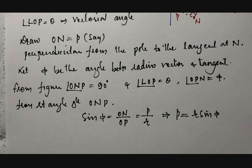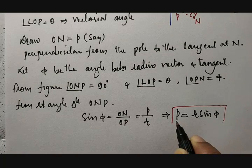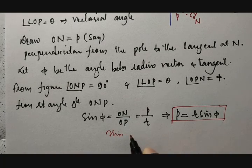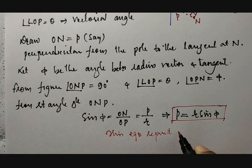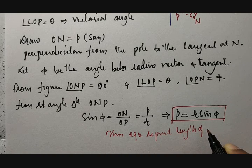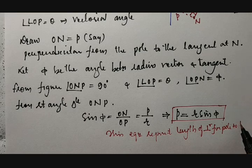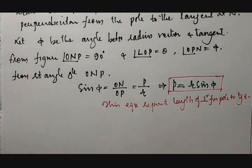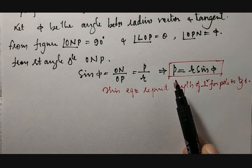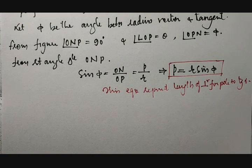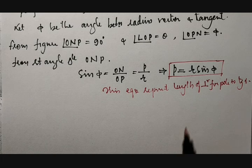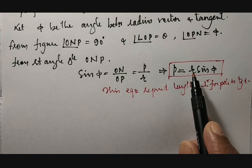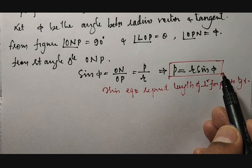This is a very important result in this context, because this equation represents the length of the perpendicular from pole to tangent. This is the basic expression. But one point we need to observe: in this result p = r·sin ψ, what is ψ? ψ is the angle between the radius vector and the tangent, and that still has to be calculated. So if we have an expression that provides us that angle, it will be better. Therefore, instead of stopping here, we continue from here again.